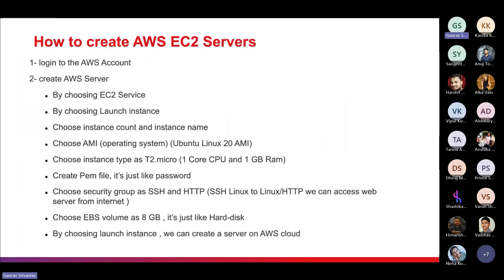Now let's see how to create an AWS EC2 server. First, log in to your AWS account. Amazon provides a few months of free tier when you create an account. After logging in, navigate to EC2, click 'Launch Instance', choose your instance name, and then choose an AMI — you can use a pre-configured AMI or create a custom one.